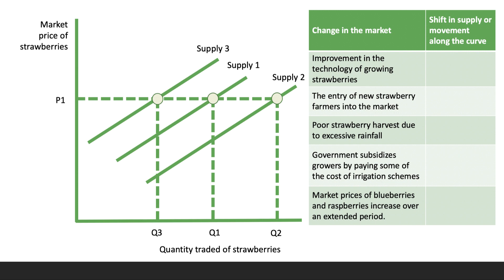Here's a diagram showing a shift from S1 to S2 — an outward shift to the right — or from S1 to S3 — an inward shift to the left. Here are five changes in the market. Press the pause button and think about which way the supply curve will shift, or whether it will just be a movement along the curve. Press play when you're ready to go through the answers.